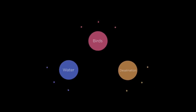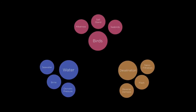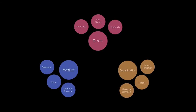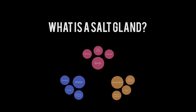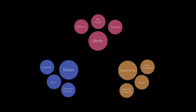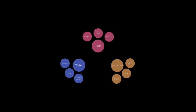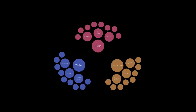Now Brian can see more of the concept space related to these three initial components. What, for instance, is a salt gland? Brian's curiosity is piqued, so he asks a new question. This further expands the concept space in that direction, demonstrating new, related concepts which might assist Brian's research. After a sufficient number of questions, Brian has developed a high-level map of the concepts that occupy the area in which he's interested and the way in which these concepts are connected.